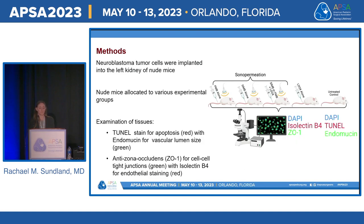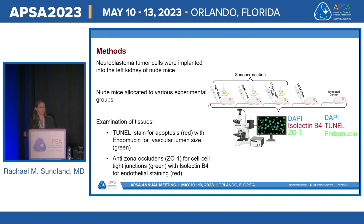Tumor cells were implanted into the kidneys of nude mice and grown for 5 to 6 weeks. Mice were divided into six groups: sono-permeation with polydispersed micro-bubbles, sono-permeation with size-isolated micro-bubbles, sono-permeation with either type combined with L-DOX, L-DOX alone, and untreated controls. After harvesting, tissues were examined using DAPI staining for nuclei, anti-zona occludens 1 for tight junctions, isolectin B4 to stain the endothelium, and tunnel staining for apoptosis. Tumor growth was also measured over 7 days post-treatment.